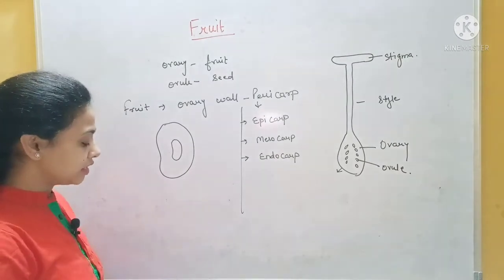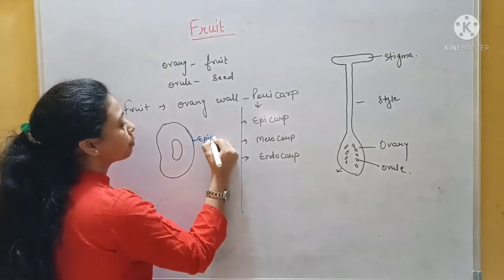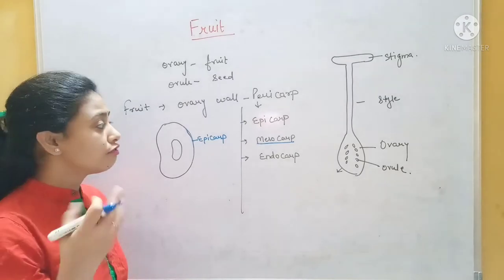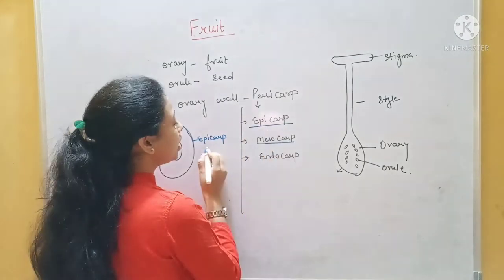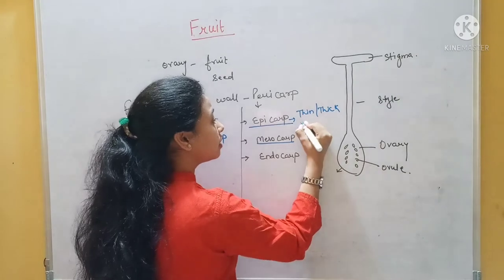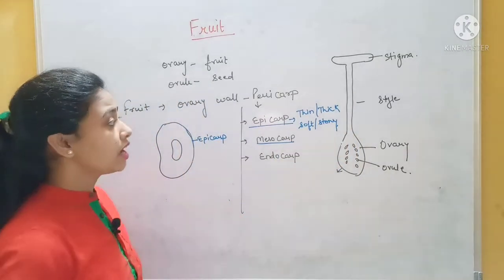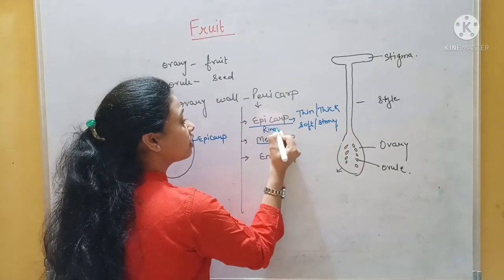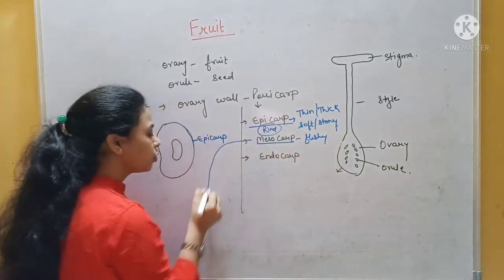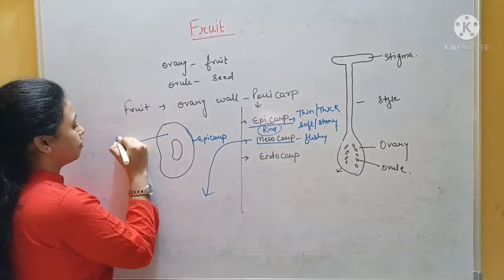So the epicarp is the outermost covering of a fruit. After that, the mesocarp — it depends on fruit to fruit. Like in mango, the mesocarp is generally fleshy. One more thing about the epicarp: it may be thin, thick, soft, or stony. Generally we call it the rind. The mesocarp is generally the fleshy part and is actually the edible part. In mango, the mesocarp is fleshy and juicy.